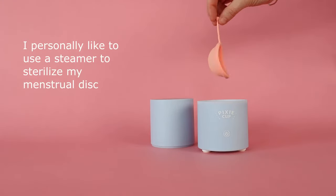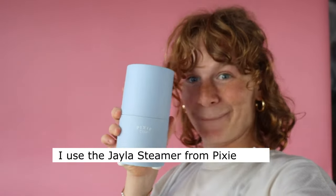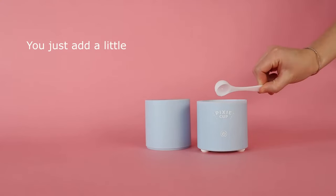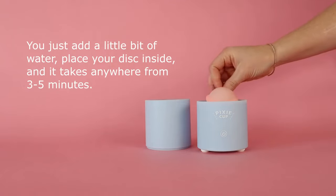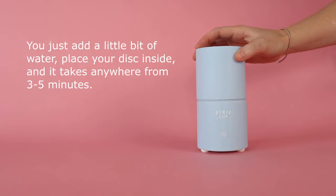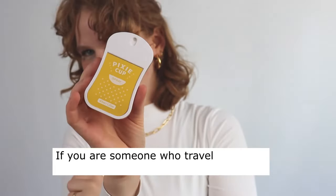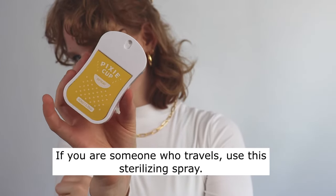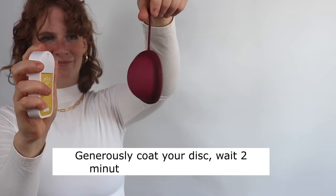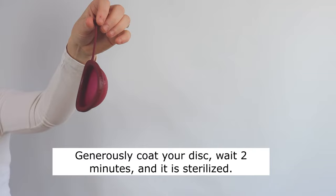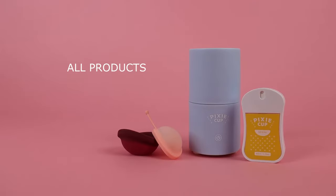I personally like to use a steamer to sterilize my menstrual disc. I use the Jayla steamer from Pixie Cup. You just add a little bit of water, place your disc inside and it takes anywhere from three to five minutes. If you are someone who travels, use this sterilizing spray. You just generously coat your disc, wait two minutes, and it's sterilized. All the products I just mentioned I do have them linked below so you can check them out there.